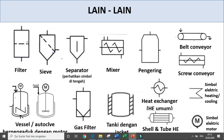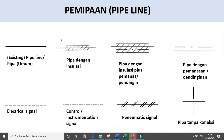Kemudian lain-lain, misalkan filter, saringan, separator, mixer, dryer, conveyor — apakah belt conveyor atau screw conveyor — apakah vessel berpengaduk dengan motor. Simbol motor dan simbol electric heating atau cooling ada di sini. Biasanya simbol electric untuk heating. Kemudian heat exchanger secara umum — apakah shell and tube juga seperti ini. Kalau memang spesifik ada flat heat exchanger ada lagi simbolnya. Kemudian tangki dengan jacket — ini adalah simbol dari jacketnya. Gas filter dan sebagainya.